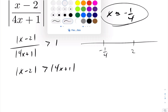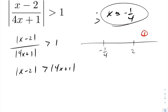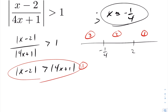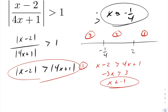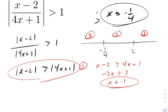Drawing the number line, the two points of interest are negative one quarter and two. We now have three intervals to examine. For interval one, picking values greater than two, both absolute value expressions are positive. Solving gives x is less than negative one, but that is not in this interval, so interval one is inadmissible — no solution from this interval.